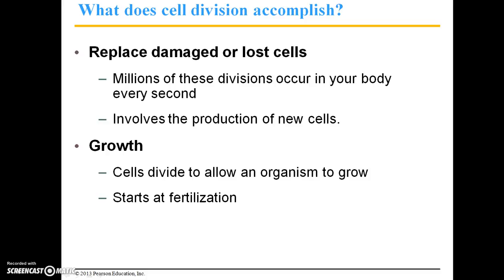This involves the production of brand new cells, and a great example of this are keratinized epidermal cells. Your outer layer of skin is constantly in contact with the environment, and especially the outer skin on your hands and feet are going to need to be replaced. The skin cells there are going to need to be replaced — that's a great example of lost and damaged cells.